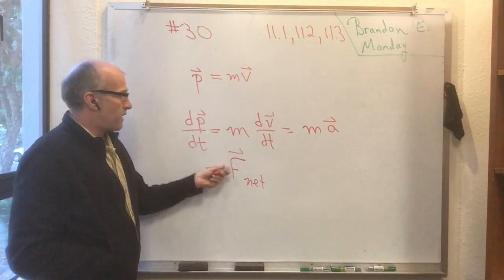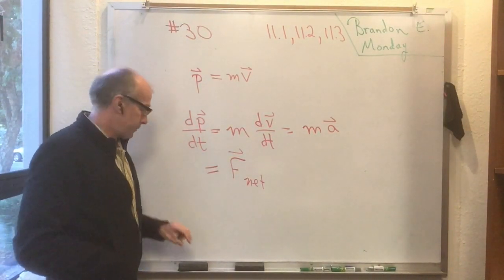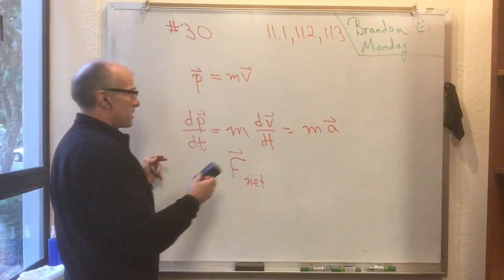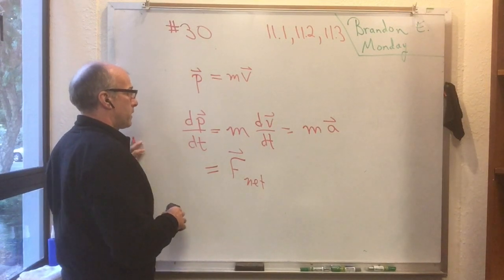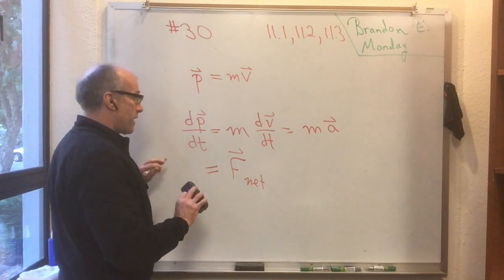So dp/dt is F_net for one particle. Really, it's just another way of writing Newton's second law, except in terms of momenta. Okay, so now what can we do with that? Here's what you can do with that.